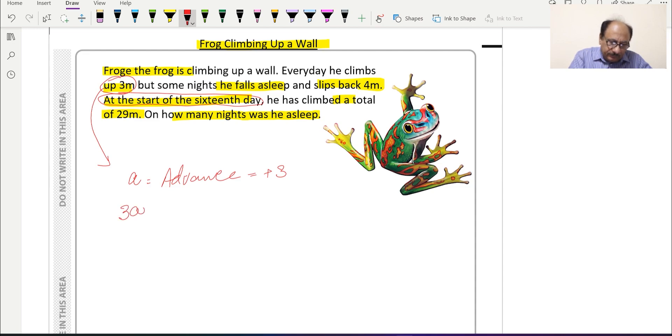We can check for the slip back which is four meters. We can take 'b' for fallback.